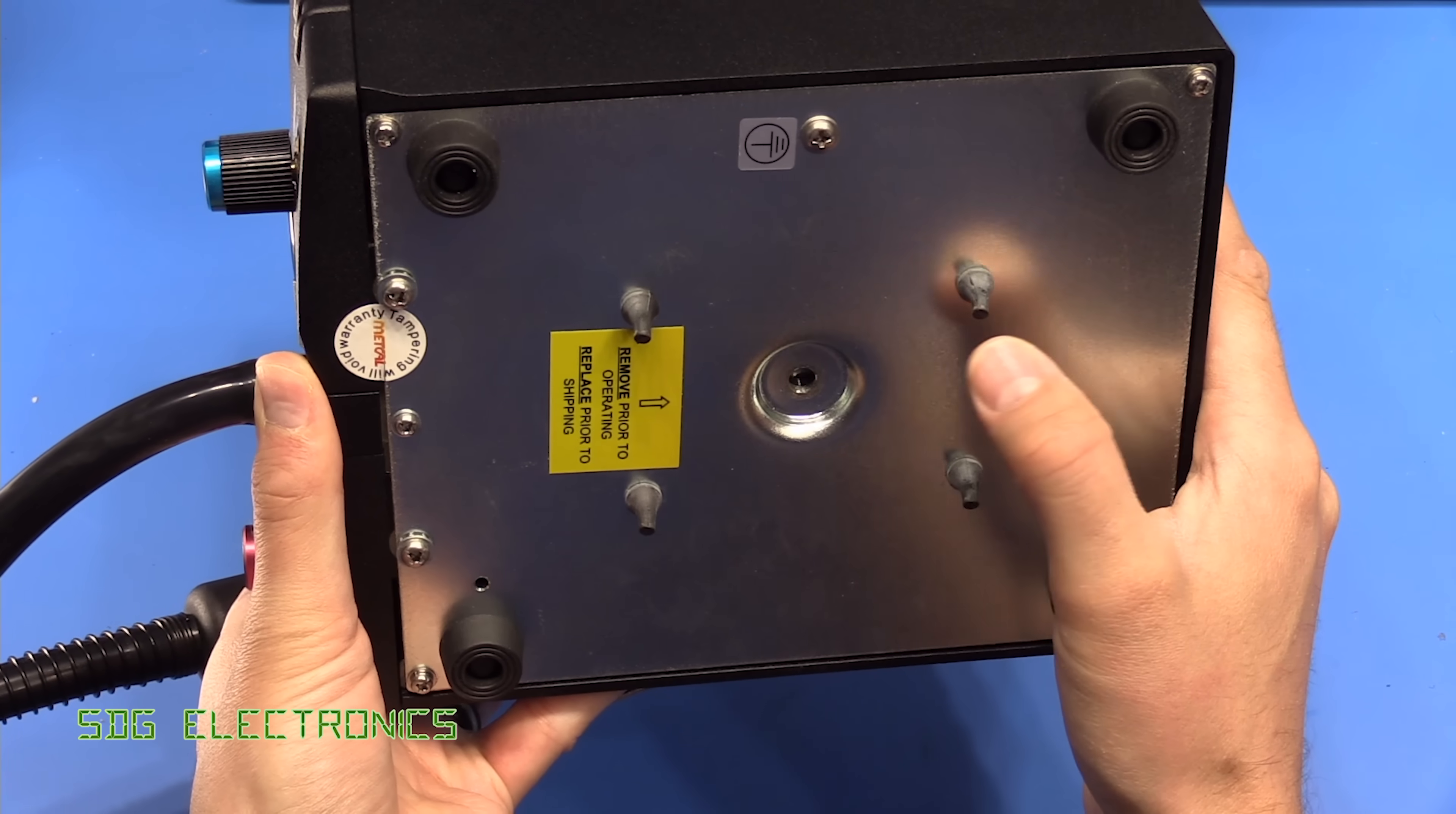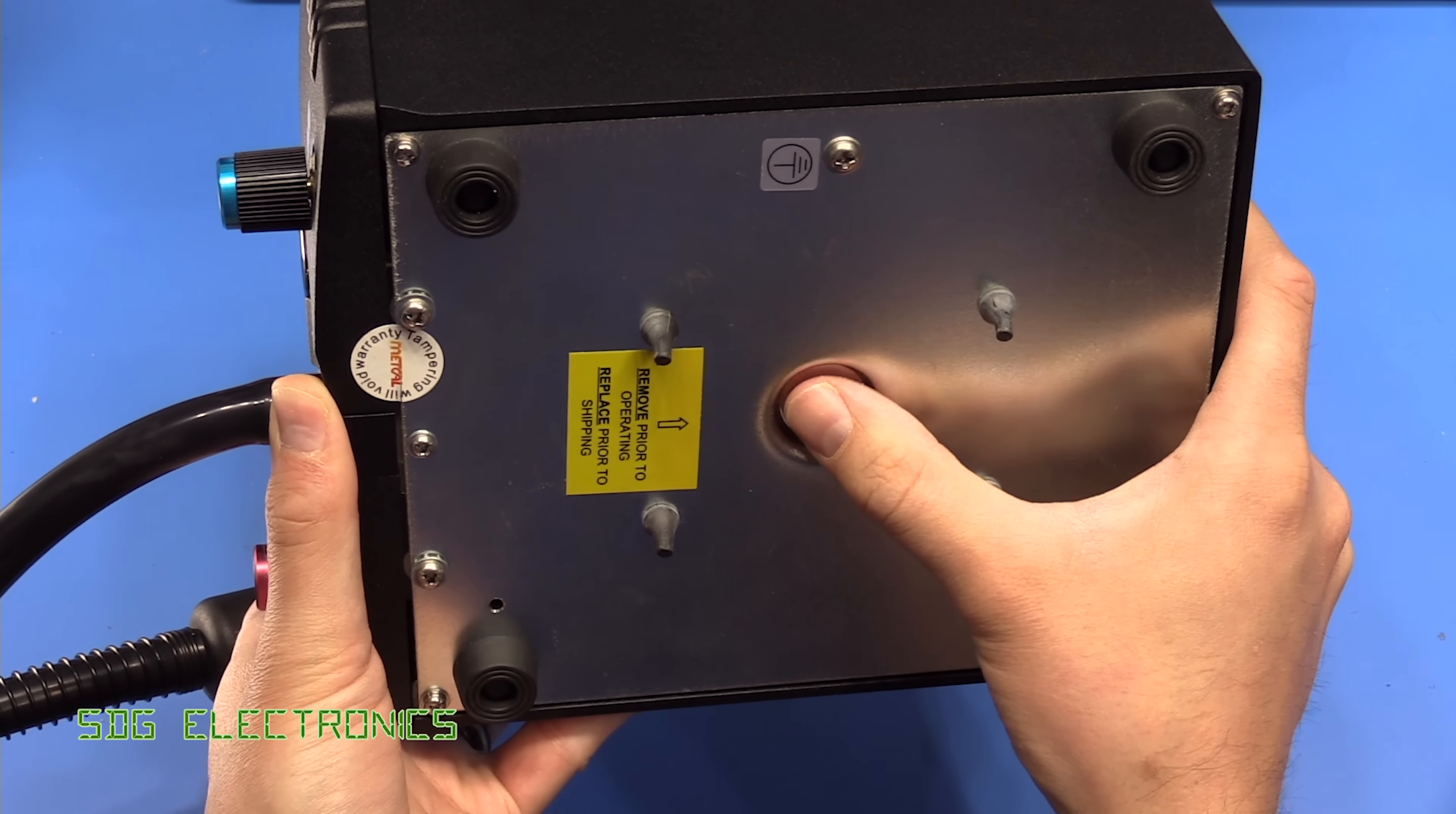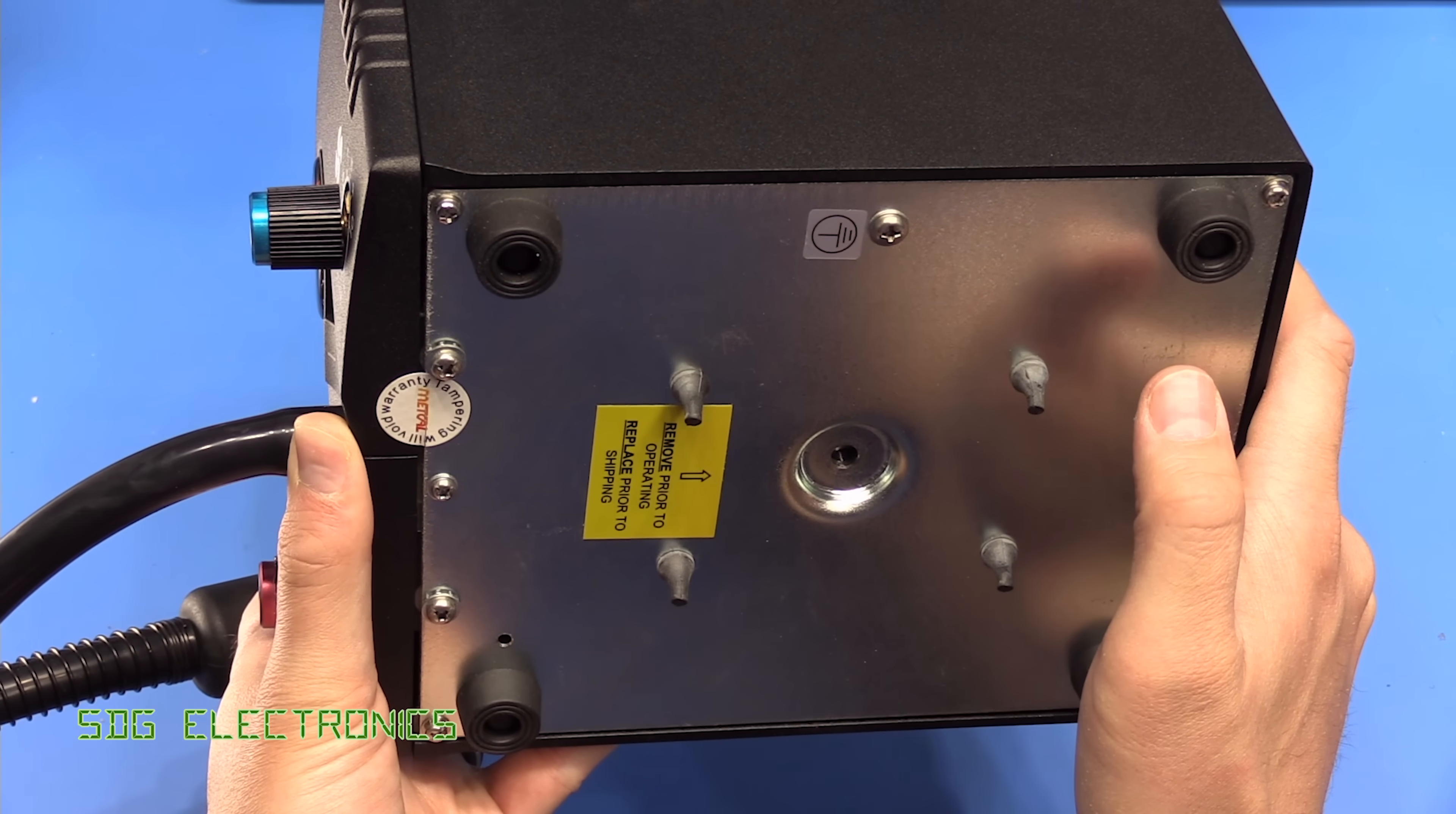There's a little screw there, so presumably this has got some kind of diaphragm pump. There's a little screw that you screw in for when you're shipping, and then when you receive the item you unscrew that screw so that the anti-vibration mounts work.